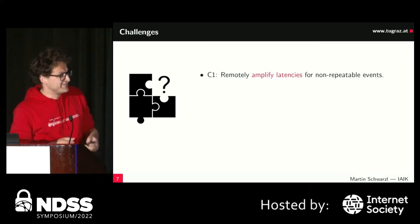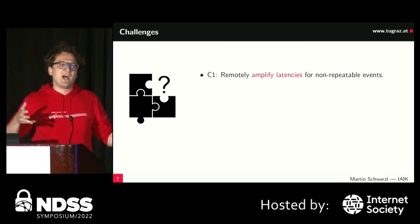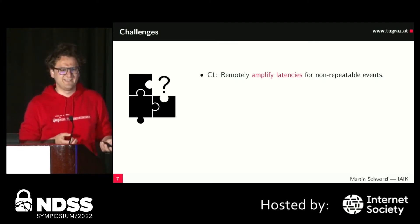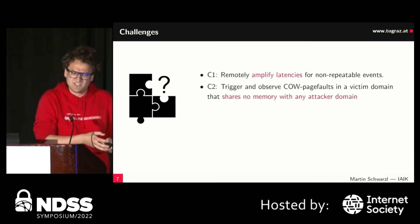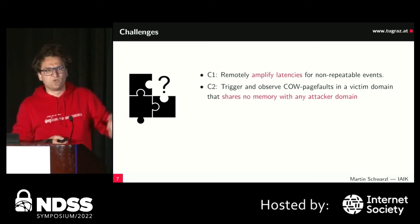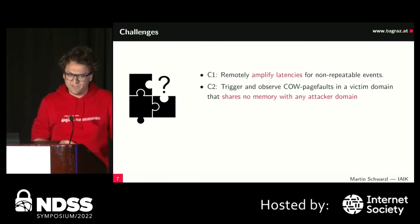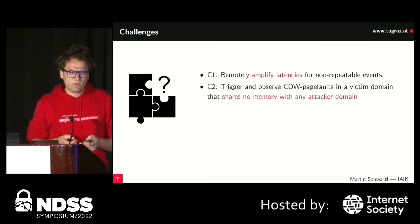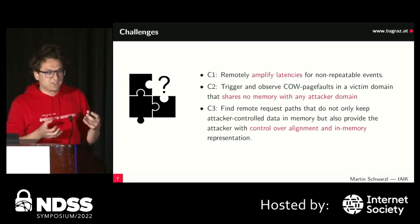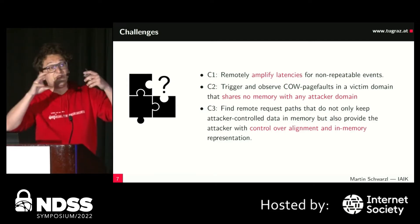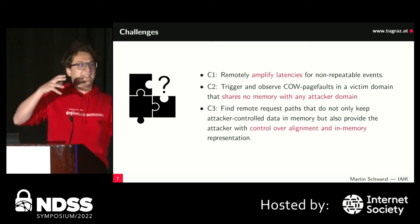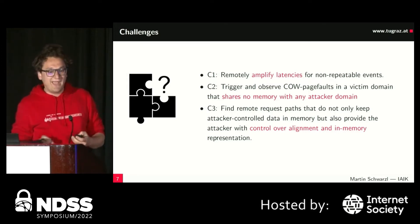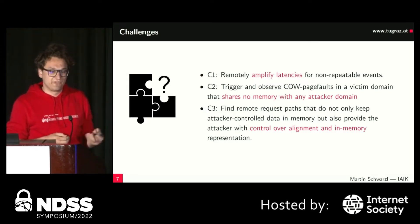In our paper we state three challenges. First: how can we overcome network noise — how can we amplify the latencies? Second: is it possible to trigger copy-on-write page faults using an API, and is such a scenario meaningful? Third: as previous work showed byte-by-byte leakage from one security domain to another, can we find a target that allows byte-by-byte shifting to enable leakage in a remote scenario?